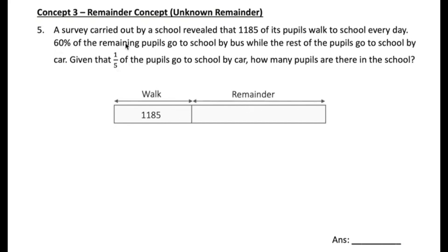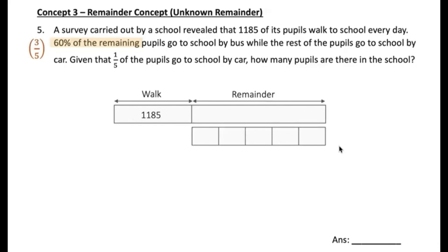So 60% of the remaining pupils go to school by bus. You can convert this into a fraction: 60 over 100 is 3 over 5. You can use your calculator to do that. So the remainder can be divided into 5 parts, of which 3 parts go to school by bus, while the rest of the pupils go to school by car. So these 2 units go to school by car.